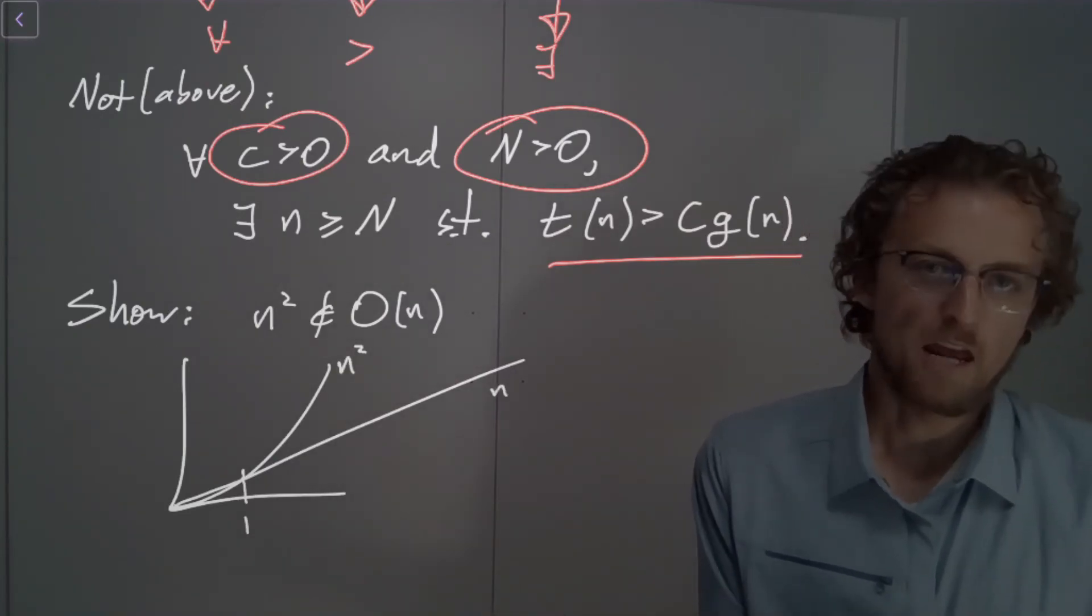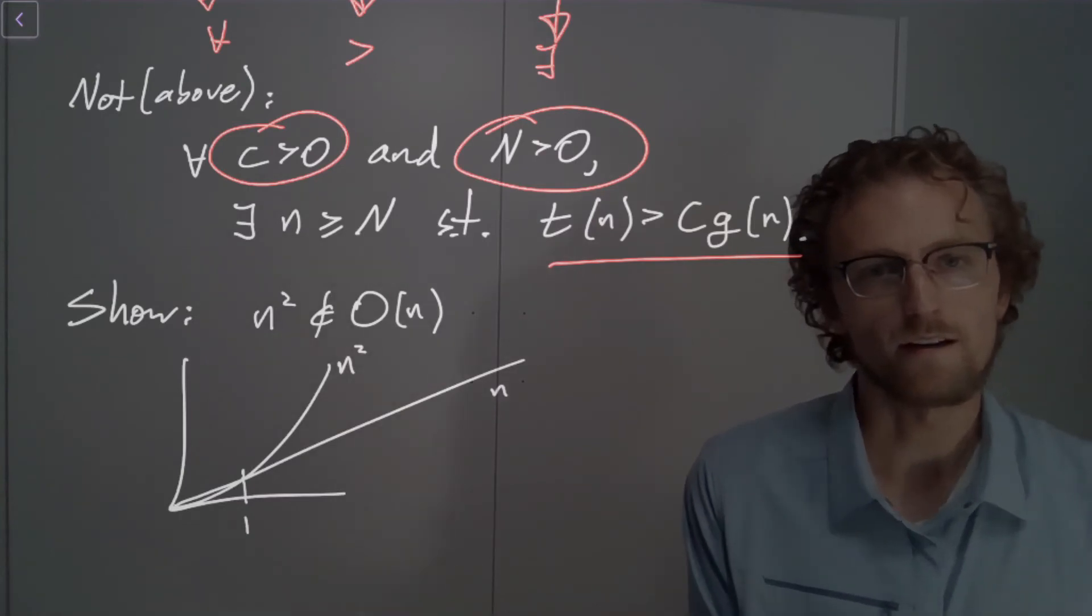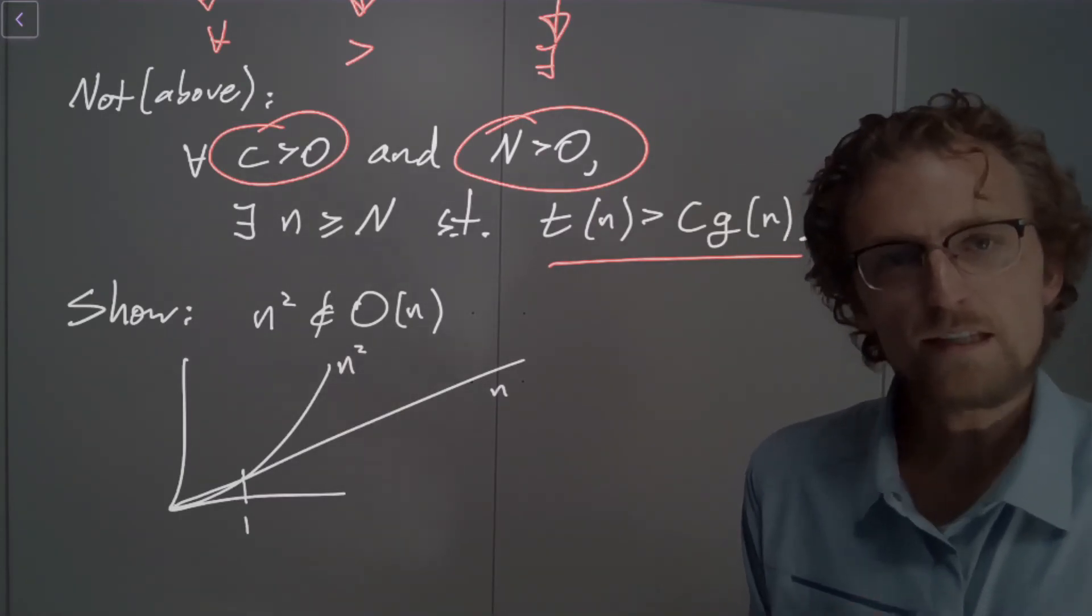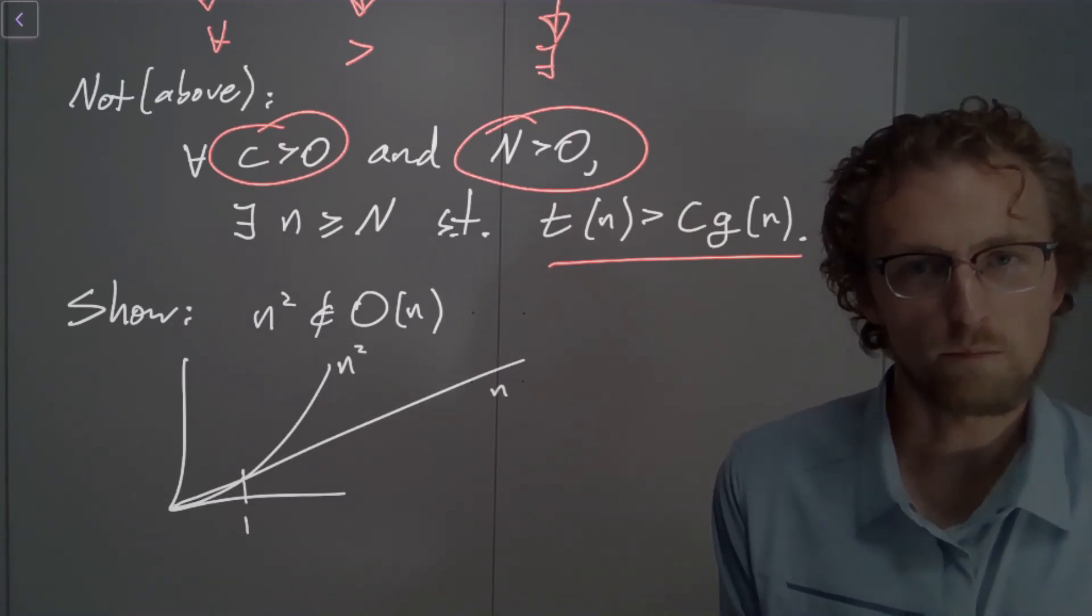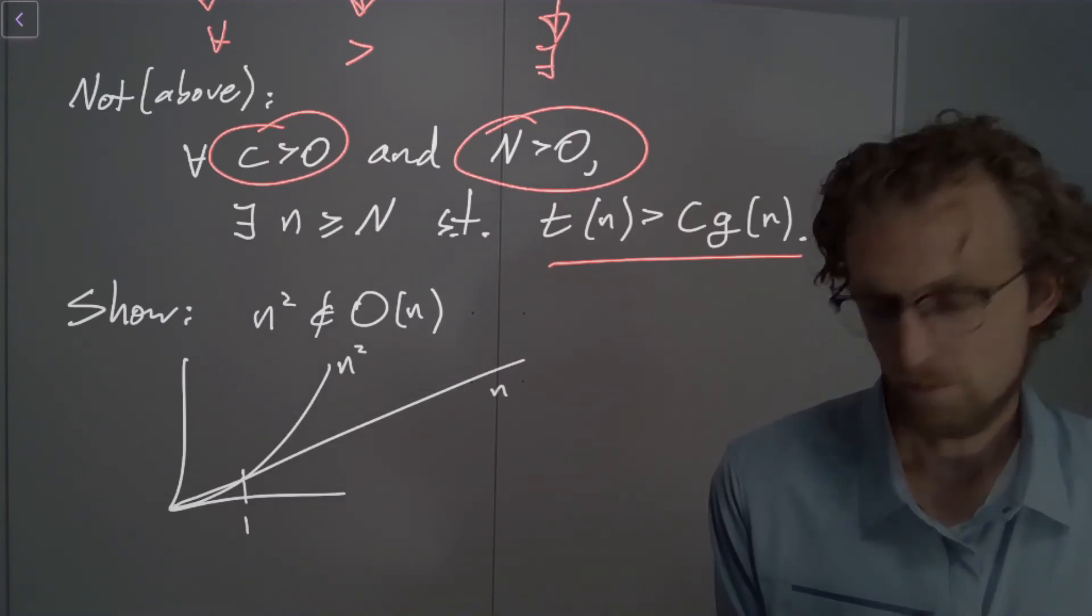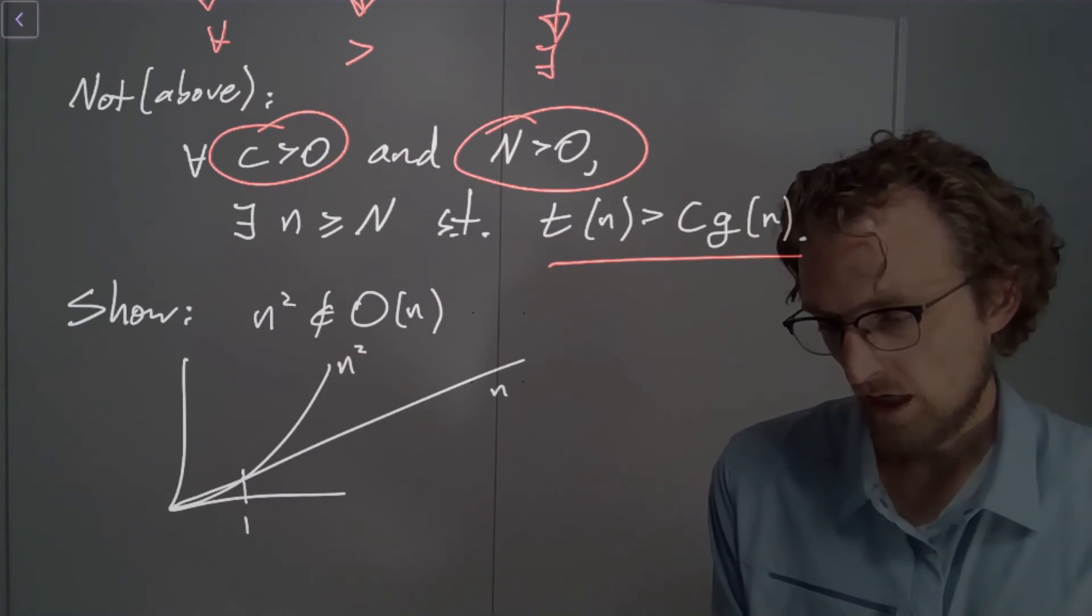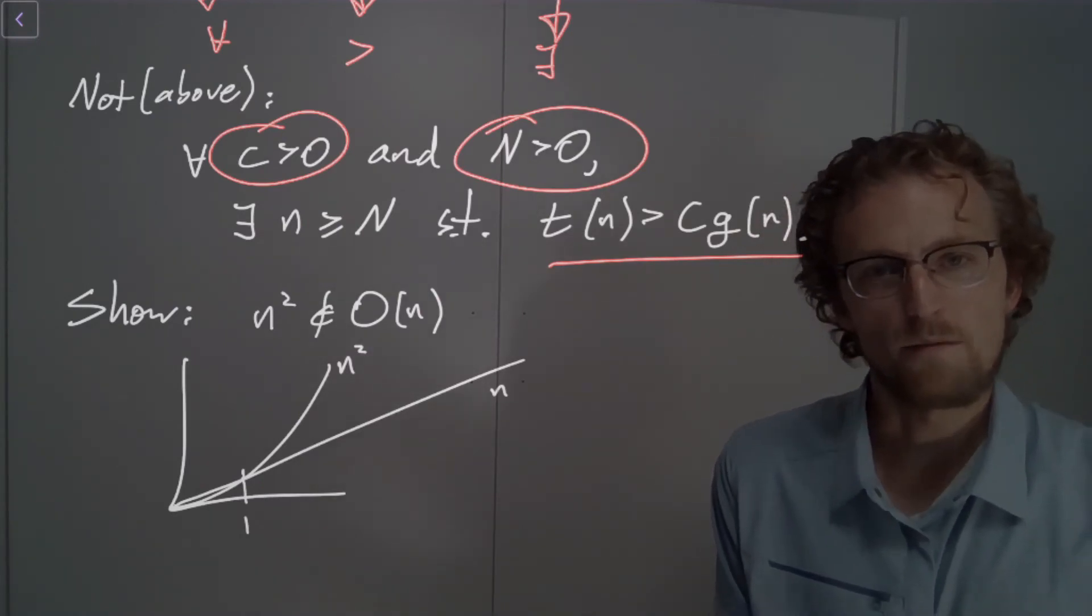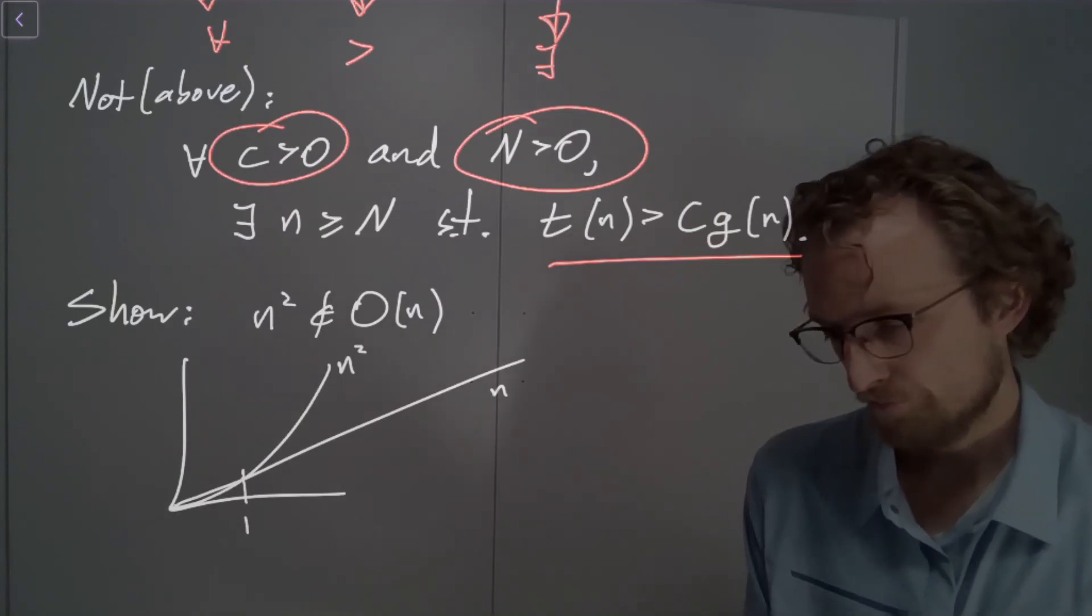But this isn't a proof that N squared isn't big O of N, right? Because what this doesn't show is that there's no way to scale up N, that makes that makes this false, right? So, what I might do, if you give me this as a proof and you say, this is a proof that N squared isn't big O of N, I might come to you and say, no.